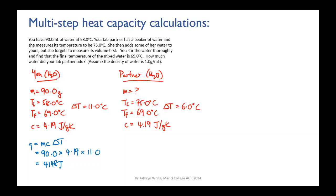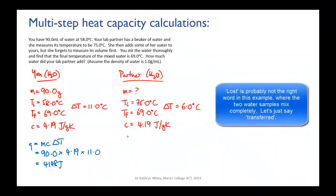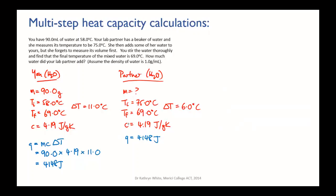So that means we know that the heat lost by your partner's water was also 4148 joules. And now with q, c, and delta T, we can work out the mass of your partner's water that was added. So we rearrange our equation to make mass the subject, and that's going to give us mass equals q over c delta T, which equals 4148 over the heat capacity times delta T for her water, which was 6.0.